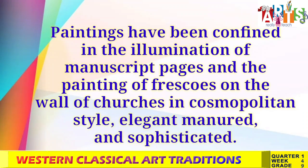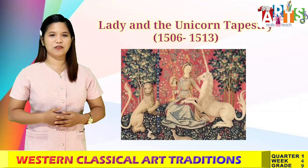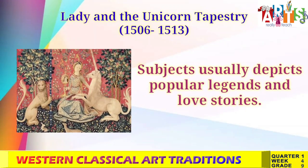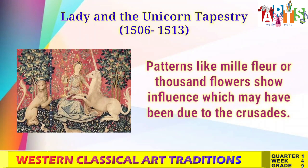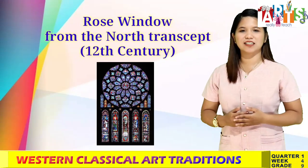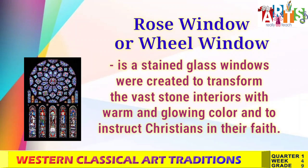And lastly, the painting from the Gothic era. Paintings were confined to the illumination of manuscript pages and the painting of frescoes on the walls of churches in a cosmopolitan style — elegant, mannered, and sophisticated. The Lady and the Unicorn tapestry, dating from 1506 to 1513, is an example of Gothic painting. Subjects usually depict popular legends and love stories. Patterns like mille-fleurs, or thousand flowers, show influences which may have been due to the Crusades. Another example of the Gothic era is the Rose Window from the north transept, dating from the 12th century. Rose windows, also called wheel windows, are stained glass windows created to transform vast stone interiors with warm and glowing color and instruct Christians in their faith.